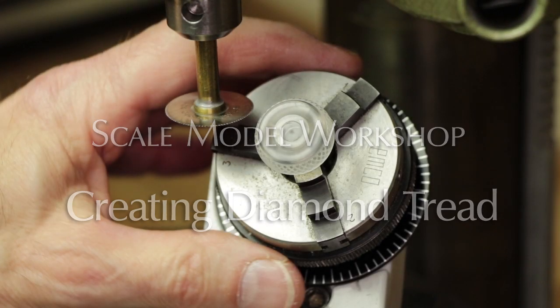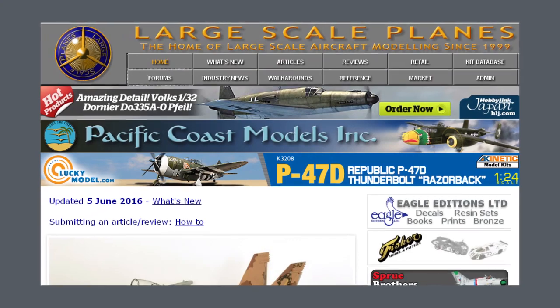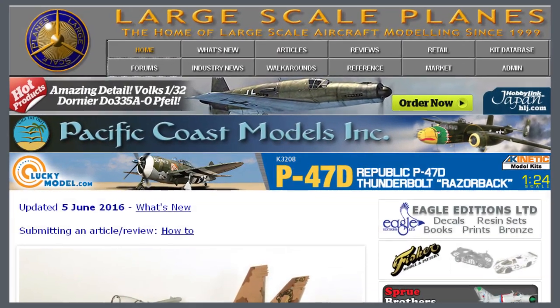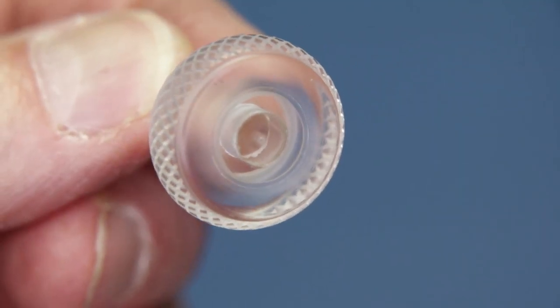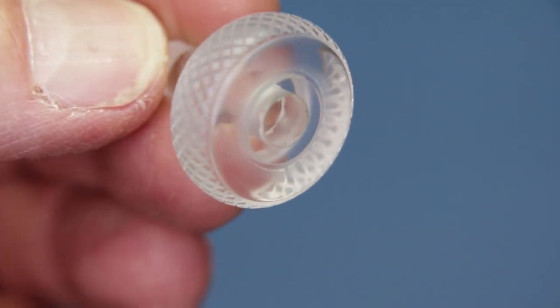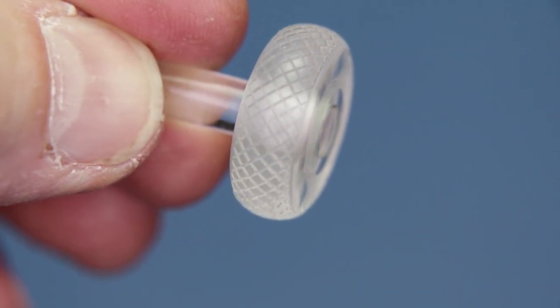This video is a quick response to a question raised on the large-scale plane's bulletin board of how to make a diamond-tread aircraft tire without resorting to 3D printing or some sort of CAD-CAM. It's also a good example of how many times the creation of a part involves several processes.